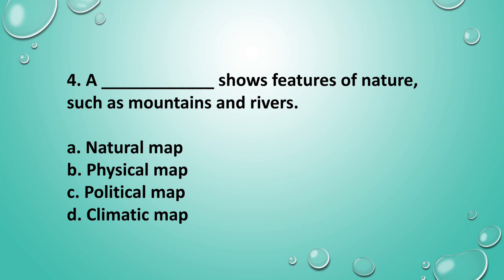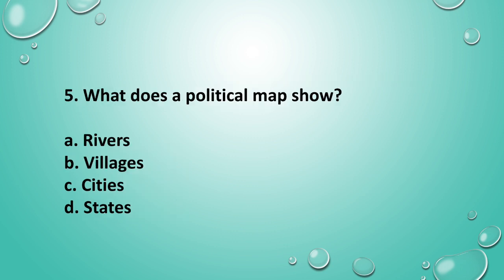Question 4: Which type of map shows features of nature such as mountains and rivers? The answer is option B, Physical map. Question 5: What does a political map show? The answer is option D, States.